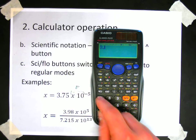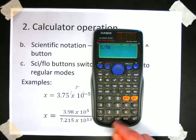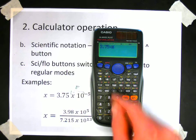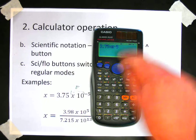And that should default it now. So if I do that again, 3.75 times 10 to the negative 5th, it should remain as a decimal.